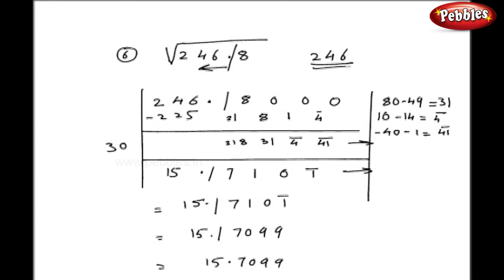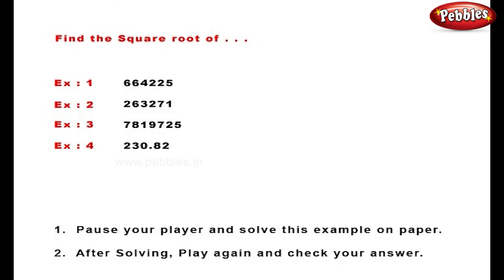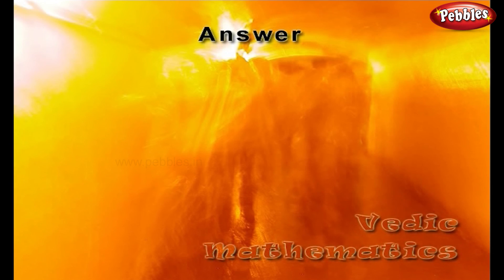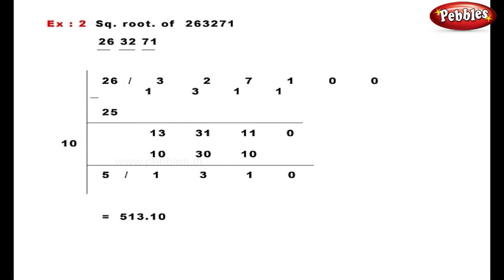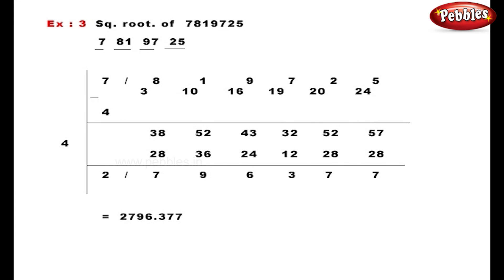So we can find the square roots of decimal numbers as well. In this case I had taken 246 as a single group, but you can divide this group into two parts — 46 and 2 — and the answer will be the same.